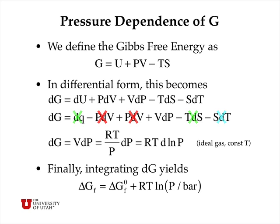And finally, integrating dG from some initial to final condition gives ΔG of formation for any substance equal to the ΔG of formation under standard conditions, that is to say one bar and temperature of interest, plus a term RT log of P expressed in units of bars.